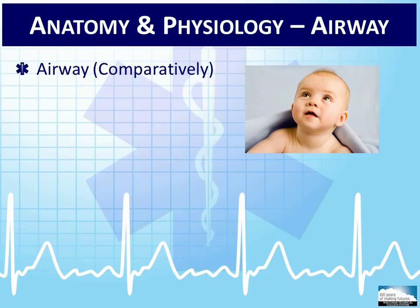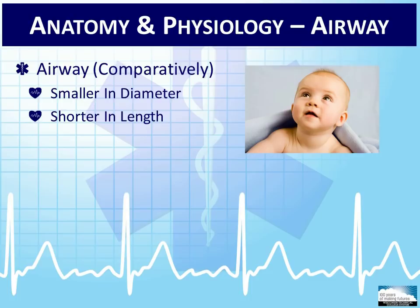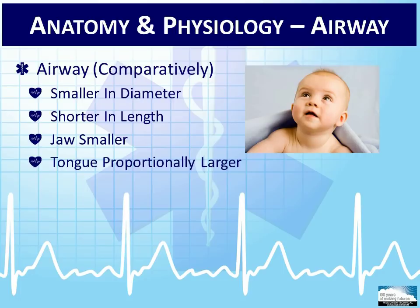Pediatric airways are smaller in diameter and shorter in length than an adult airway. Any compromise, such as swelling, fluid, or trauma, can be very detrimental to the pediatric patient's ability to breathe adequately — more so than in an adult patient. The jaw size is smaller, while the tongue is proportionally larger in the mouth compared to the adult patient. The tongue is generally one of the most common obstructions in the pediatric airway. Opening the airway with a jaw thrust maneuver will help position the tongue to ensure optimal airway patency. Infants are obligate nose breathers, which allows them to breathe and swallow at the same time.